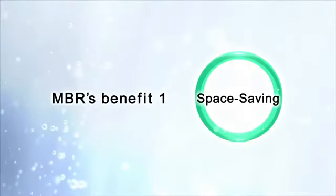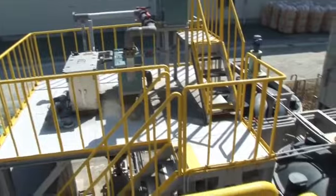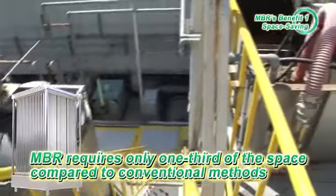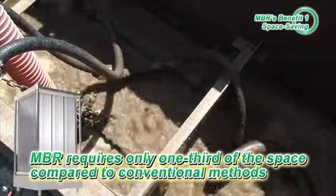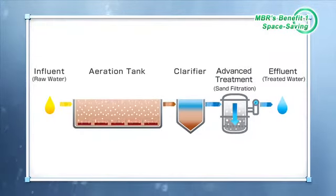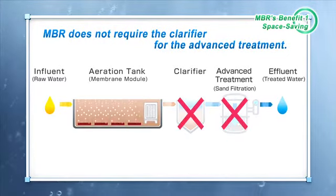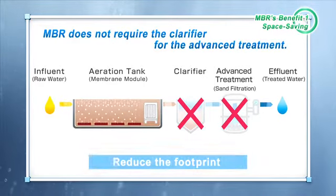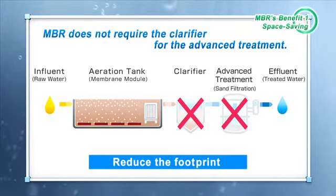Benefit 1: Space Saving. Compared to conventional methods, MBR requires only one-third of the space in large-scale treatment plants. Since MBR filters water using membrane modules, it does not require the settling tank and advanced treatment. Therefore, only the biological treatment tank is necessary, leading to efficient use of space in the plant.